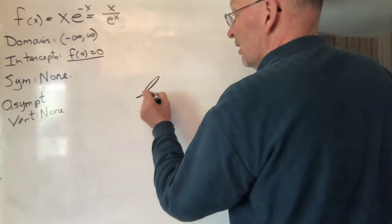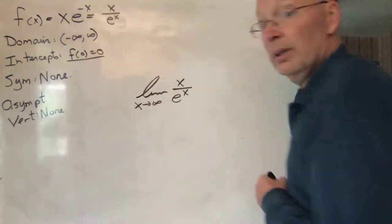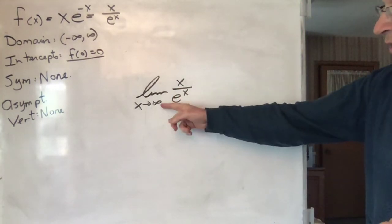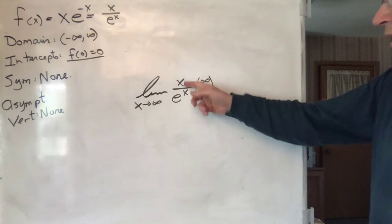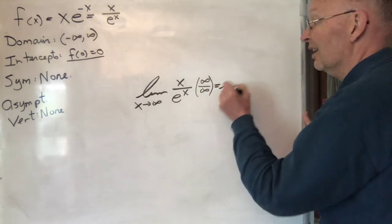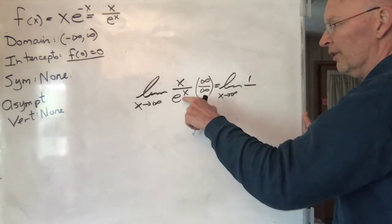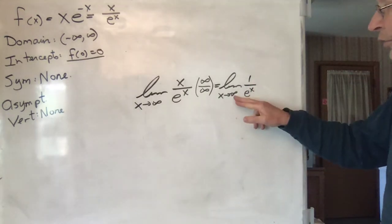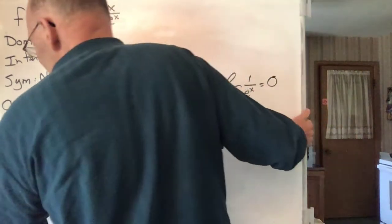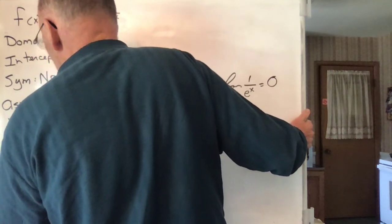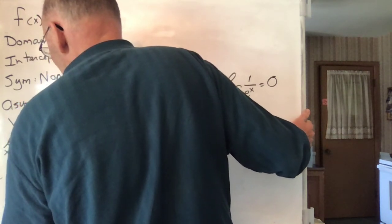For horizontal asymptotes, let's check what happens as x goes to infinity. Written as x over e^x, both of these things are going off to infinity, so we can use L'Hôpital's rule. The derivative of x is 1; the derivative of e^x is e^x. As x goes to infinity, 1 over a big number goes to zero. So the limit is zero.